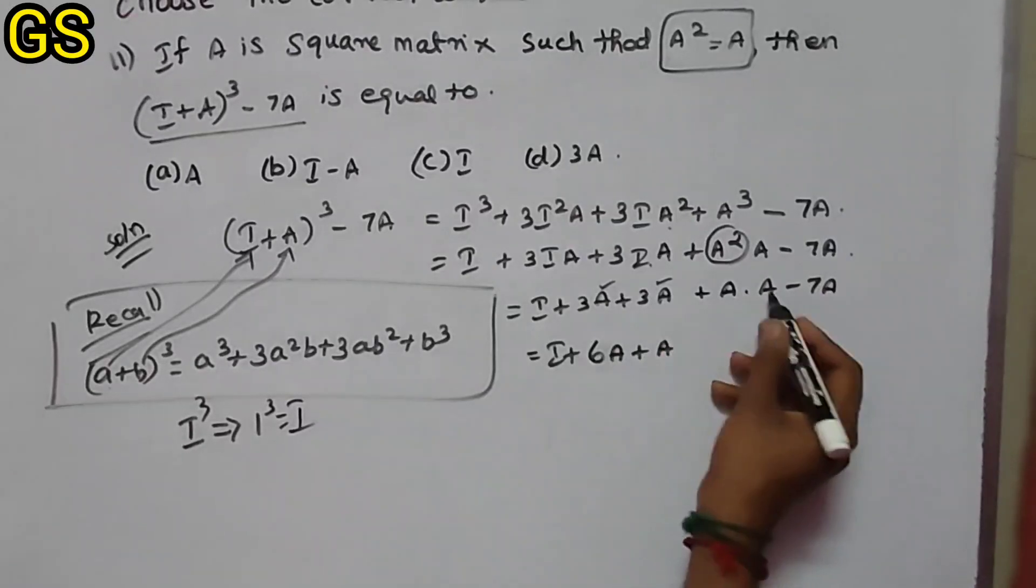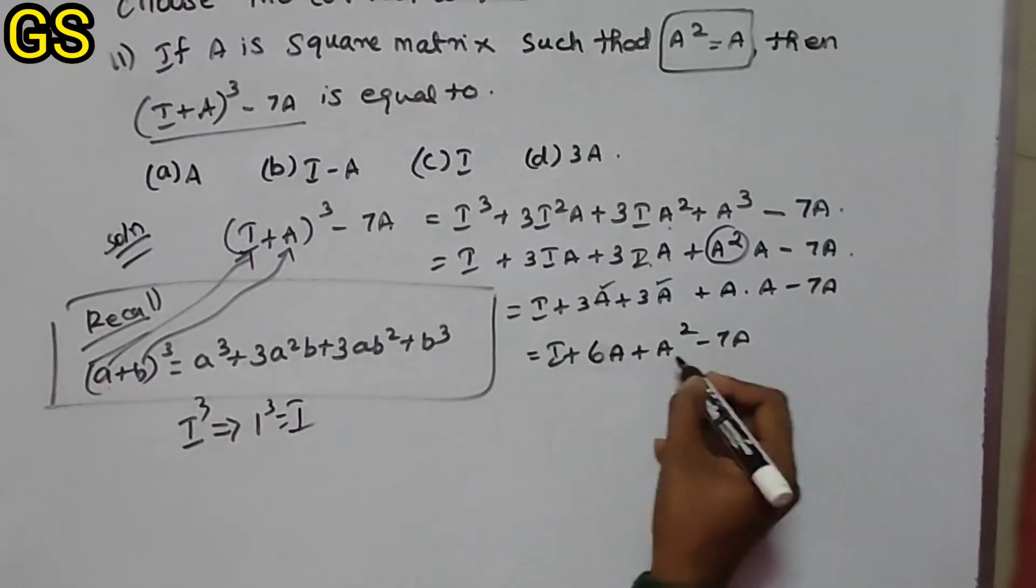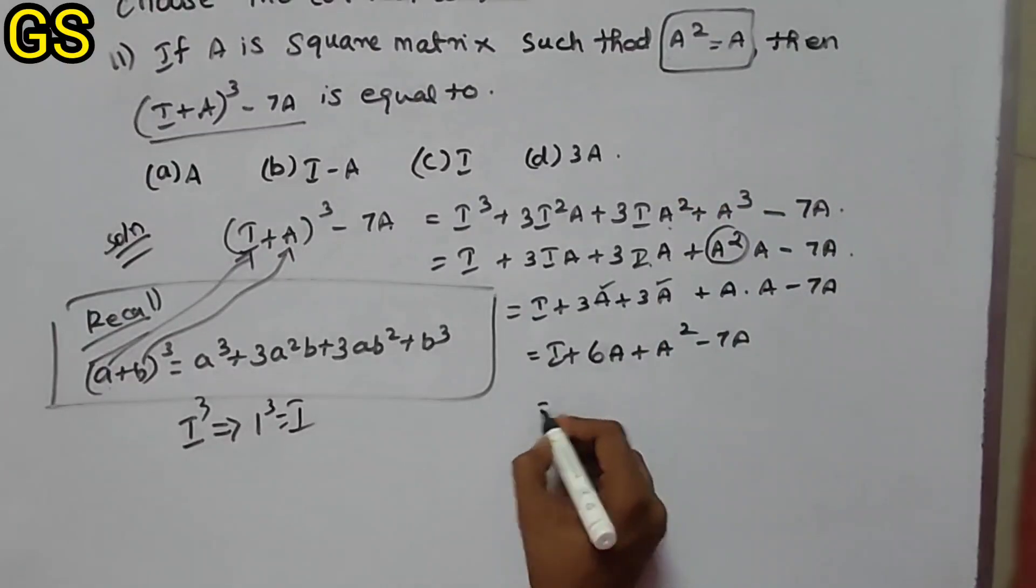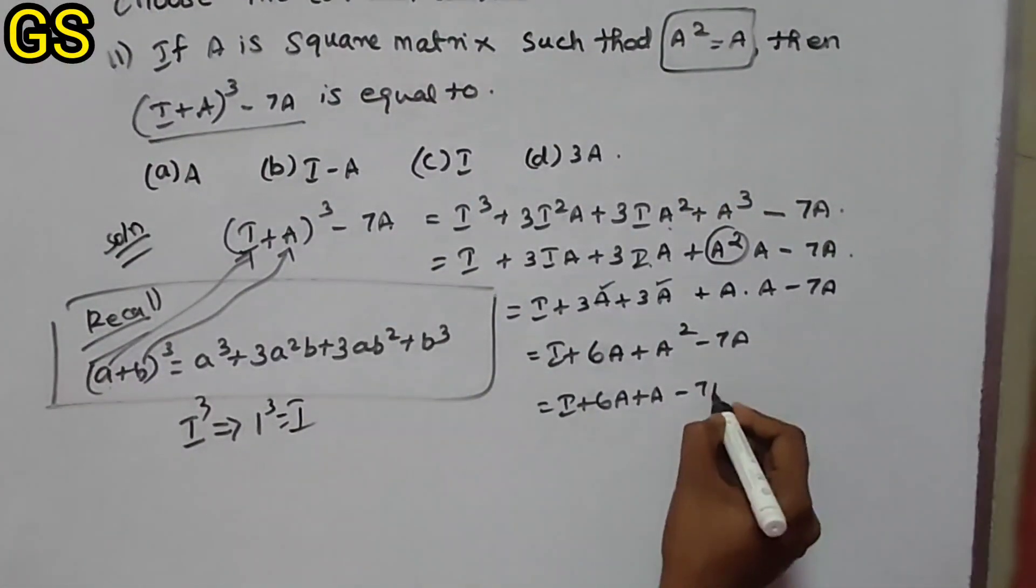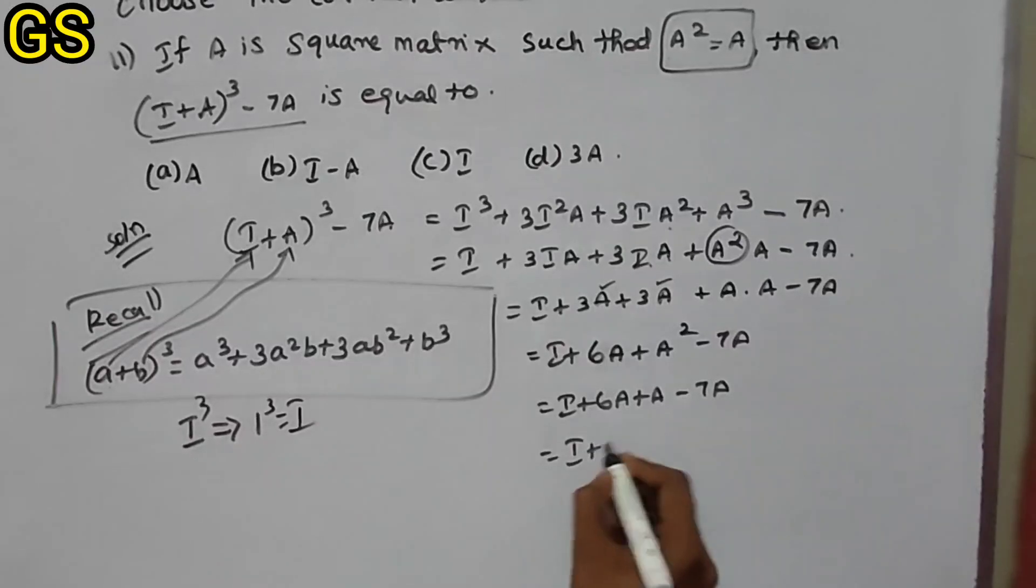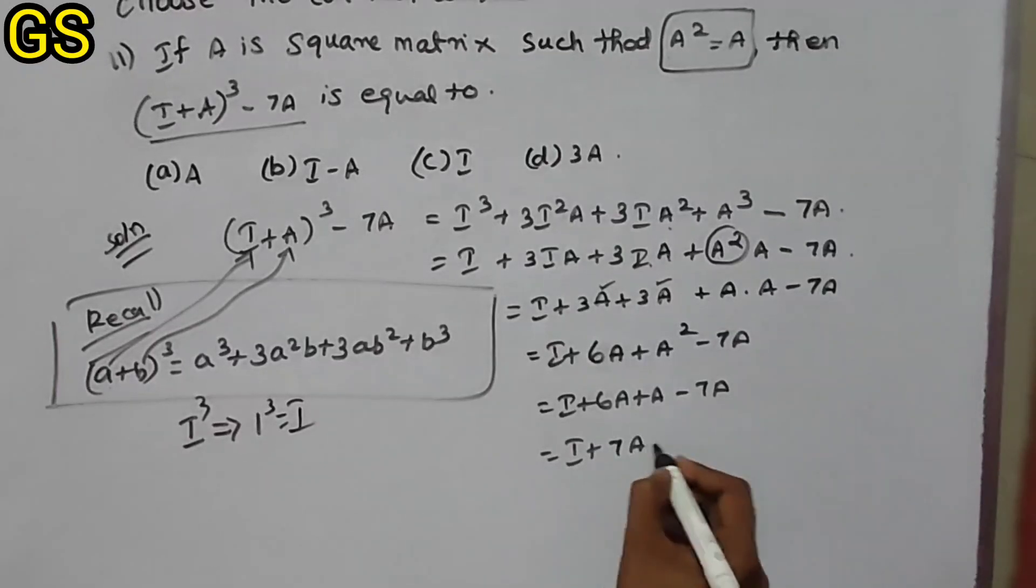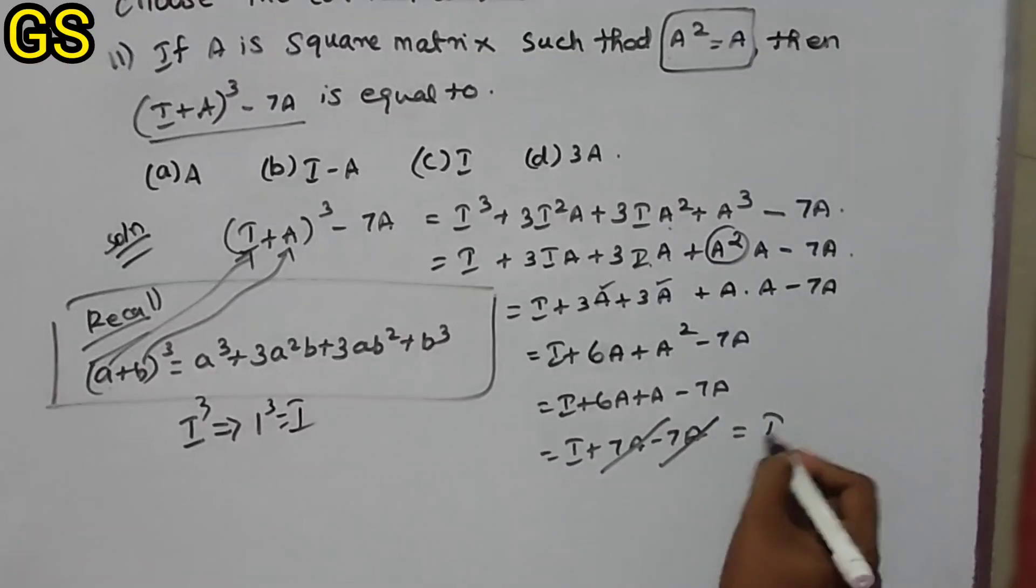Plus A times A, which is A² minus 7A. Since A² = A, we have I + 6A + A - 7A. The 7A cancels with -7A, so the answer is I.